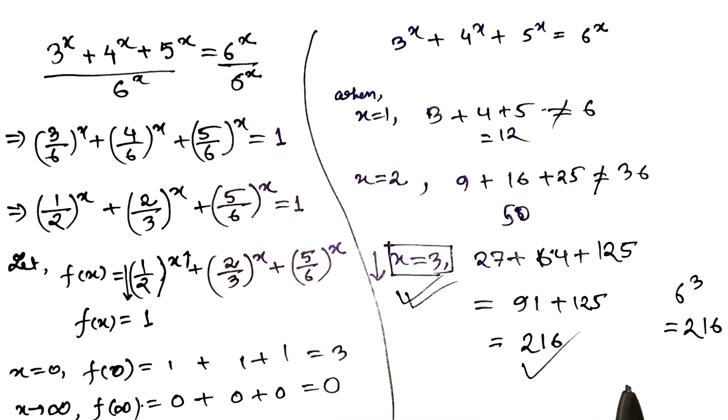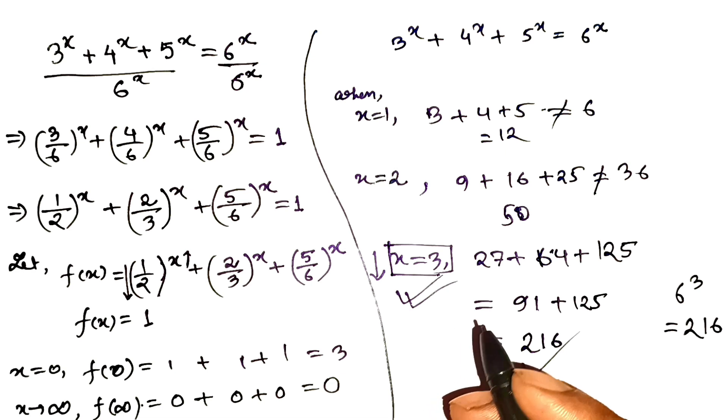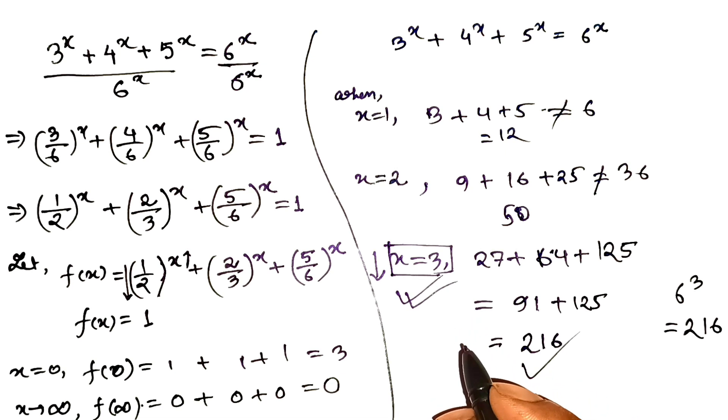And so here's the grand conclusion. We prove the function only crosses once, we check the numbers, and we found the magic spot. And it happens exactly at x equals 3. That is the one, the only solution.